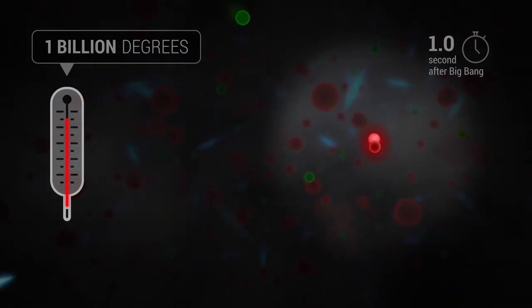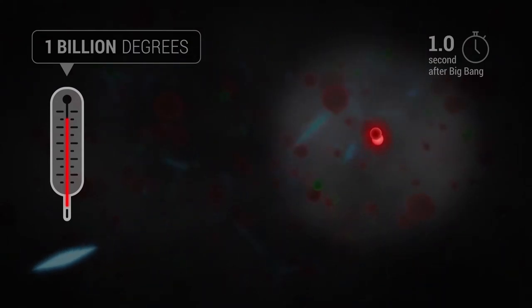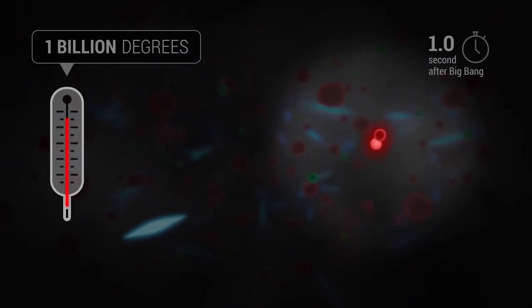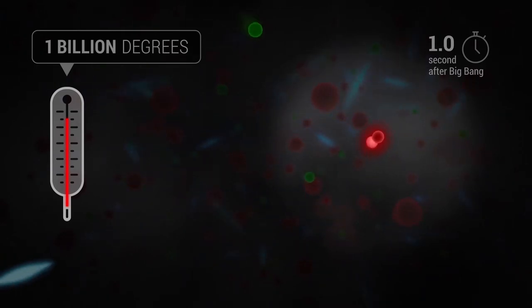But electrons couldn't gather onto those nuclei because they were relentlessly smashed aside by powerful photons. This made the nuclei ionized. They had protons, which are positively charged, but no negatively charged electrons to balance out their charge and make them neutral.